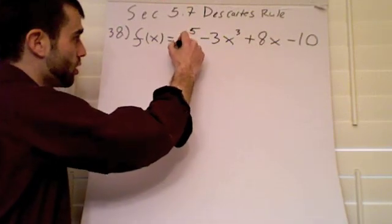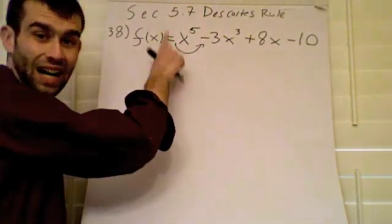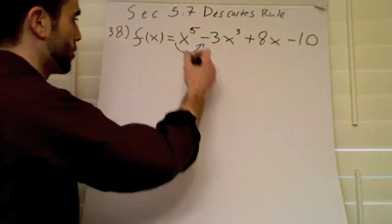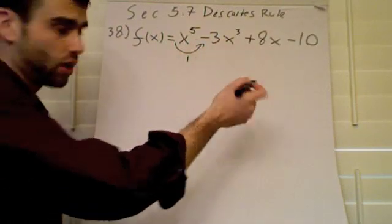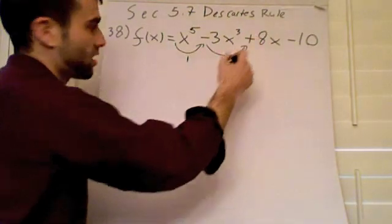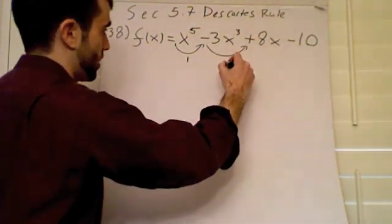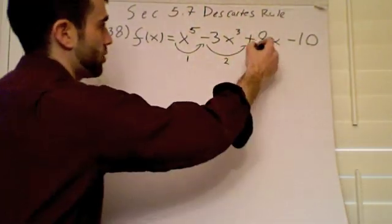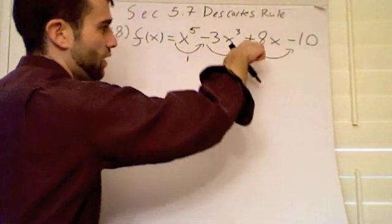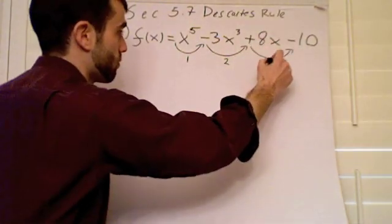Remember, we go from this front here to this one. Notice it goes from a positive to a negative. That means we're going to have one sign change. If we go from a negative to a positive, we have another sign change. That's two. Finally, when we go from this one to here, we have a positive negative. That's three.